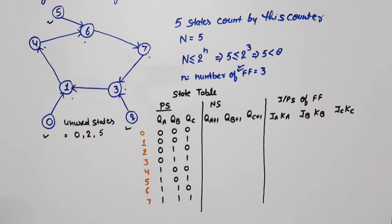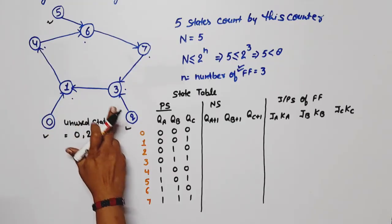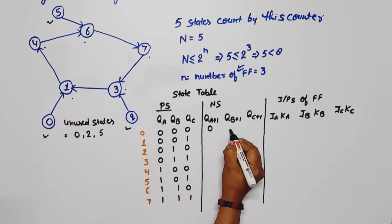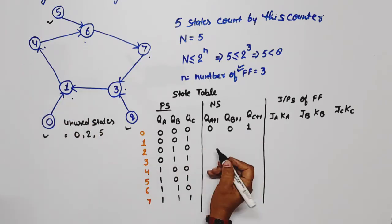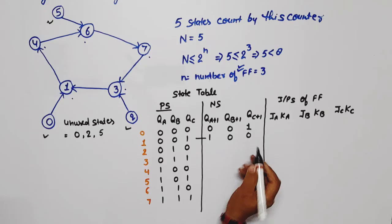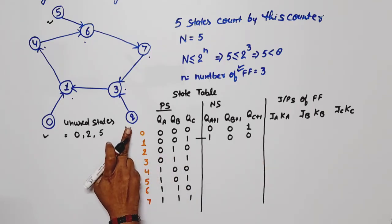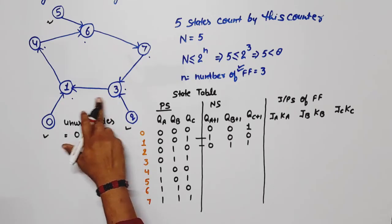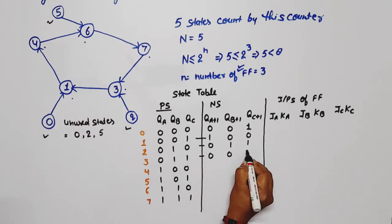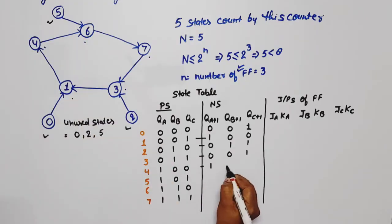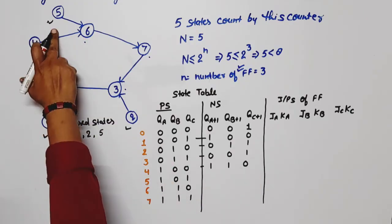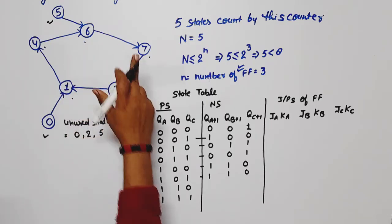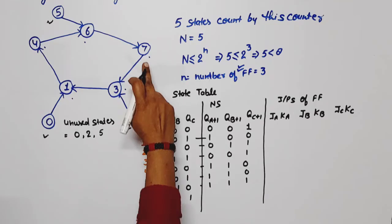If the counter goes into an unused state, we define where it will go to avoid lockout. From state 0, it goes to 1. From state 1, next state is the sequence value. State 2 is unused, so it goes to 3. From 3, it goes to 1. From 4, it goes to 6. State 5 is unused, so it goes to 6. From 6, next state is 7. After 7, next state is 3.